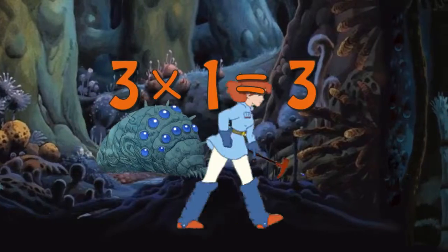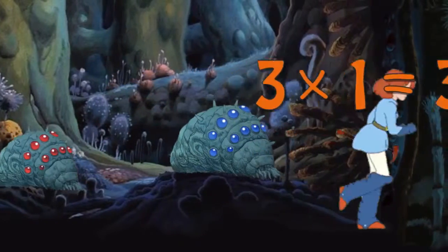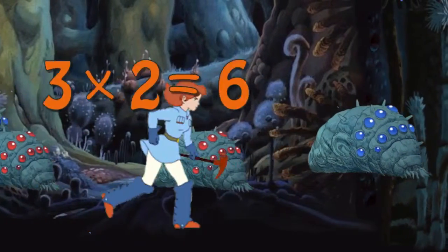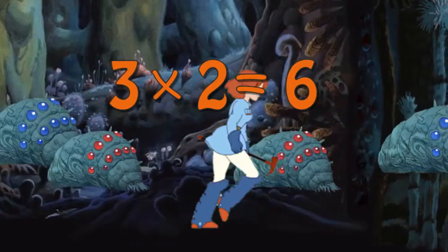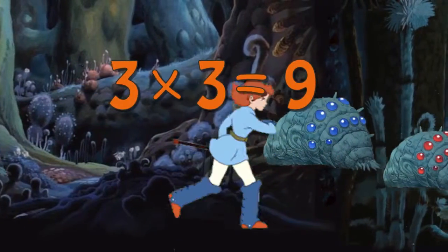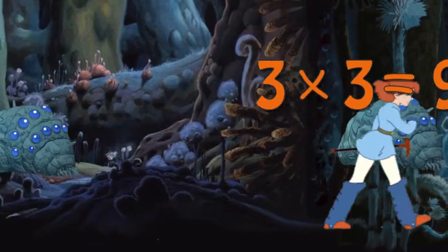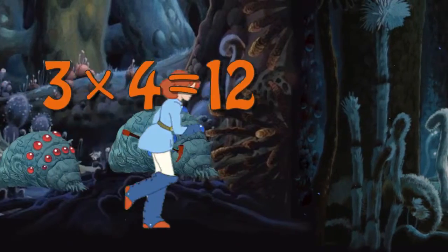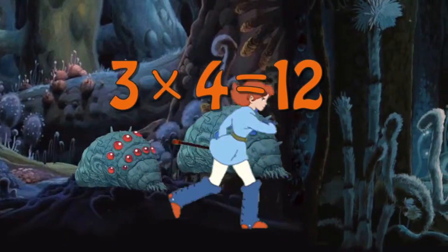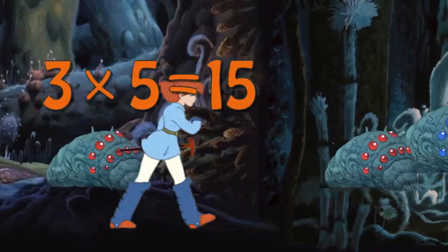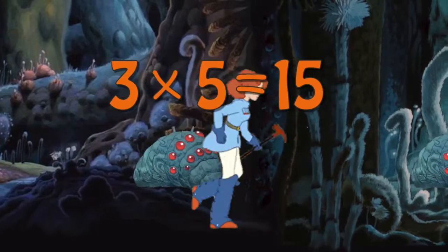Three times one is three. Three times two is six. Three times three is nine. Three times four is twelve. Three times five is fifteen.